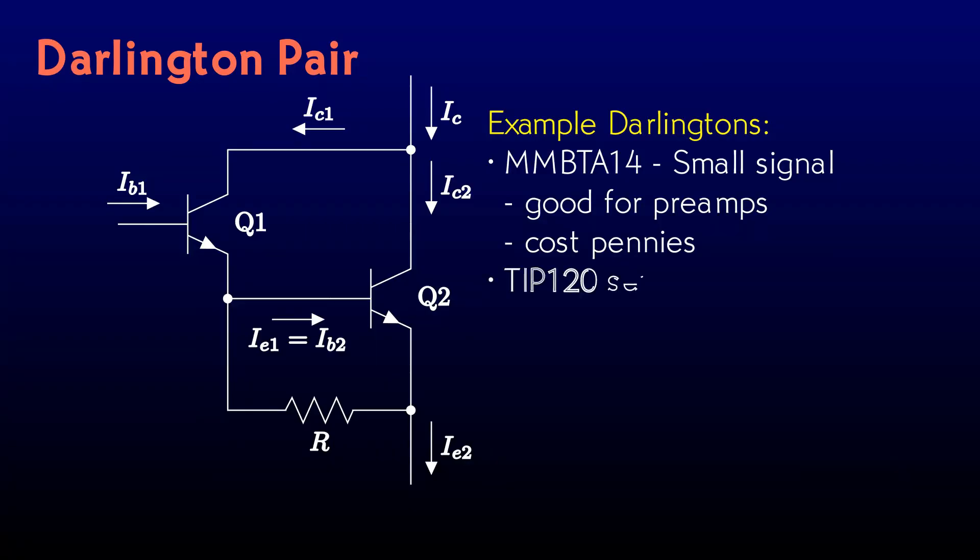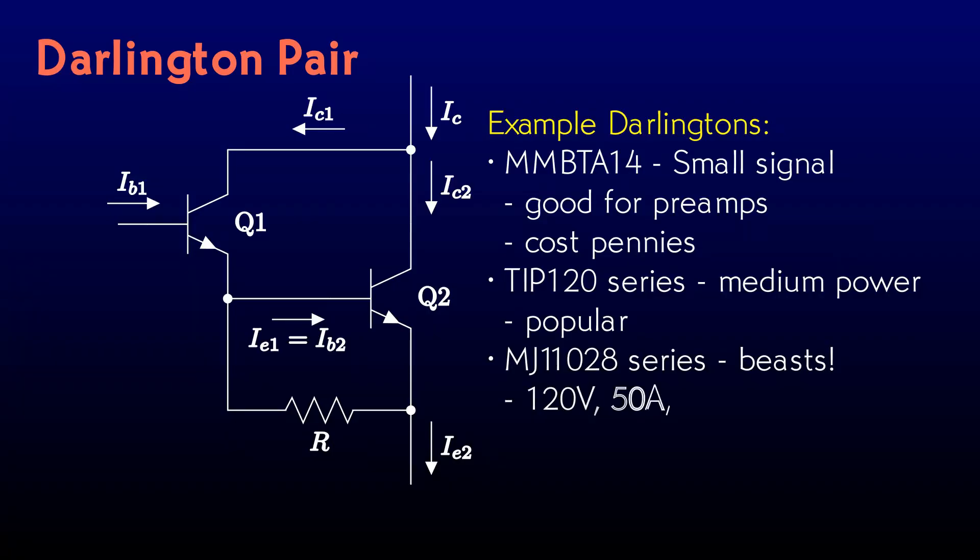For everyday applications that need a power transistor, the TIP120 series is a perennial favorite. They can switch up to about 5 amperes, so they're good to drive small stepper motors and such like. And packaged Darlingtons come in sizes that are absolute beasts. The MJ11028 series can switch up to 50 amps at 120 volts. You see them in things like variable frequency drives for big motors. A set of these, in the right sort of bridge setup, can drive the windings of a 10 horsepower, 480-volt three-phase motor.